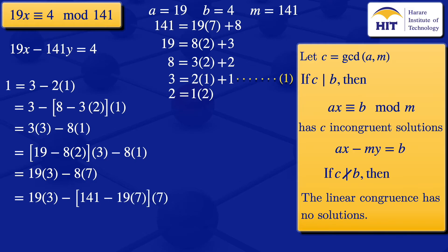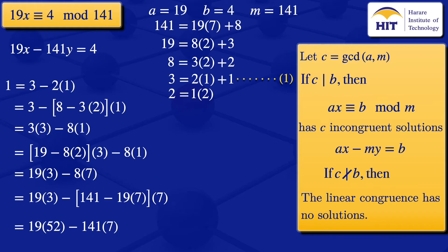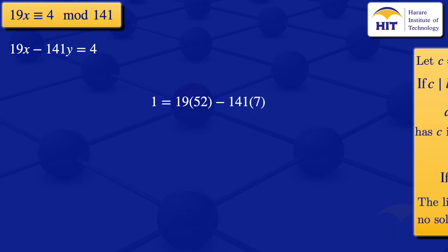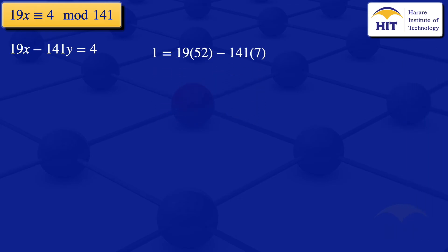From the first step, 8 = 141 − 19 × 7. Substituting: 1 = 19 × 3 − (141 − 19 × 7) × 7 = 19 × 3 + 19 × 49 − 141 × 7 = 19 × 52 − 141 × 7. So we have 1 = 19 × 52 − 141 × 7.